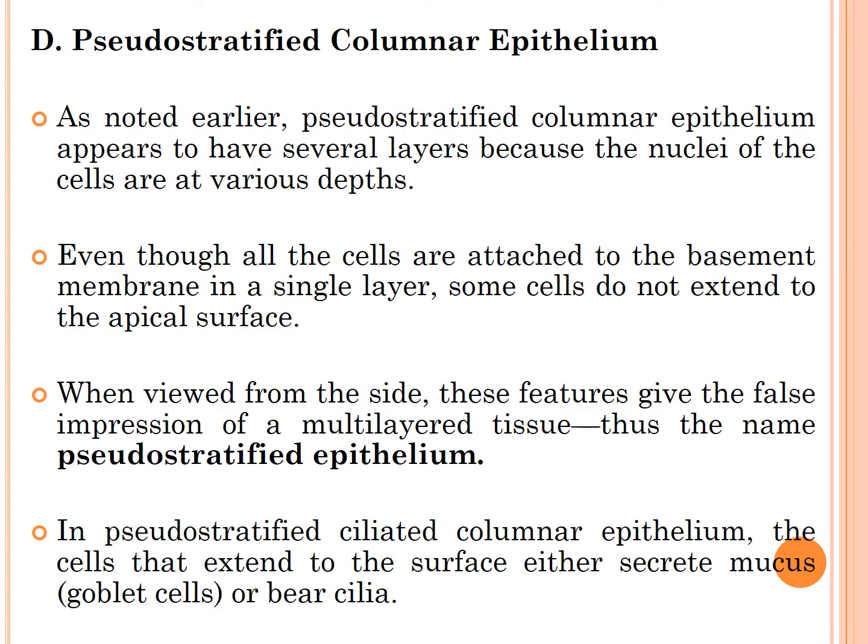The last part of simple epithelial tissue is pseudostratified columnar epithelium. It appears to have several layers because the nuclei of the cells are at various depths. Even though all cells are attached to the basement membrane in a single layer, some cells do not extend to the apical surface, giving a false impression of multiple layers — hence the name 'pseudostratified.' In pseudostratified ciliated columnar epithelium, cells that extend to the surface either secrete mucus or bear cilia.